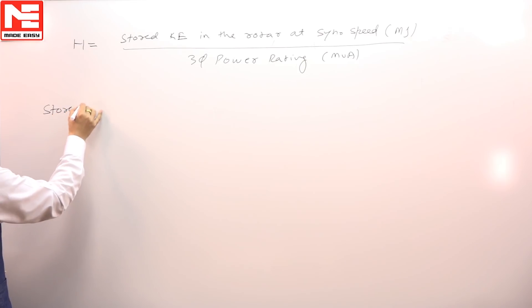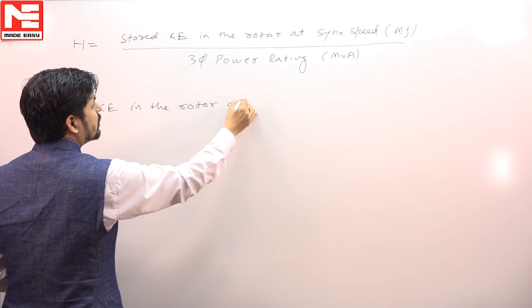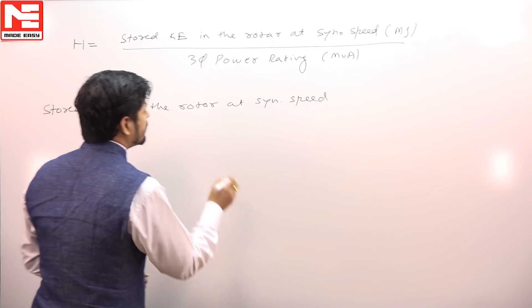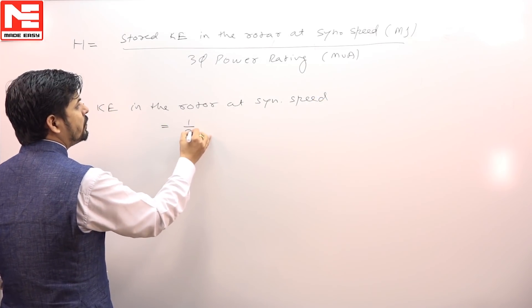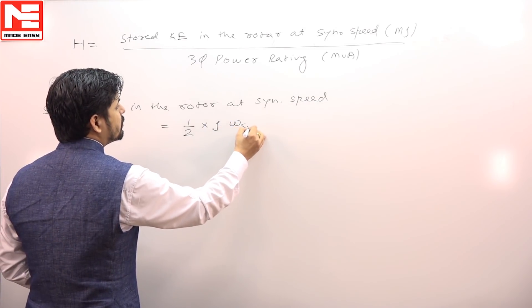What is stored kinetic energy in the rotor at synchronous speed? It is half into J times omega_sm whole square.